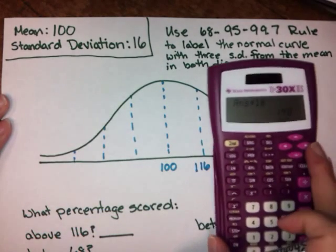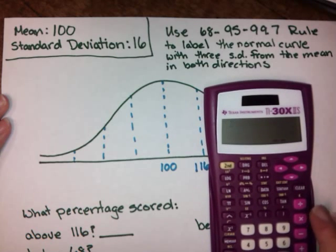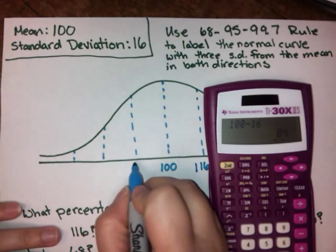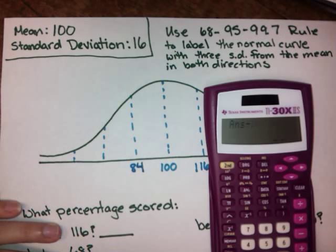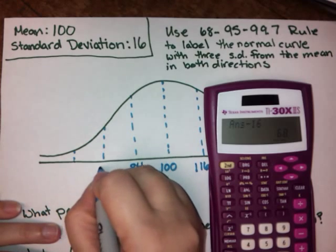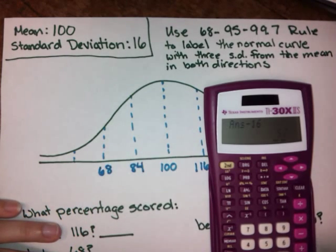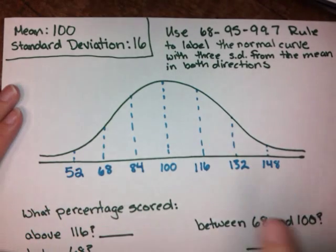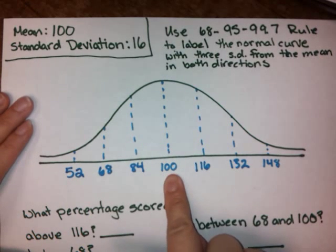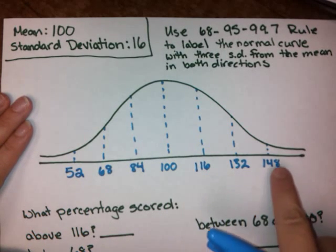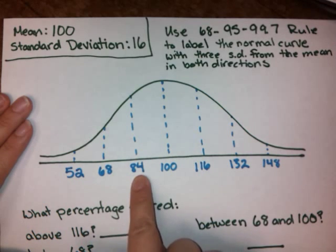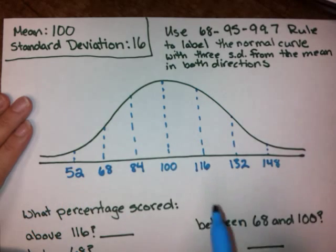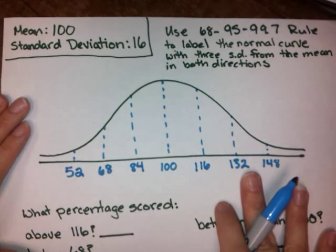Now we do the same thing in the opposite direction — we subtract. 100 minus 16 gives us 84. Subtract 16 again: 68. Subtract 16 again: 52. So my standard deviations are labeled: this is 1 above, 2 above, 3 above, and 1 below, 2 below, and 3 below. All I'm doing is moving in increments of 16 away from the mean.